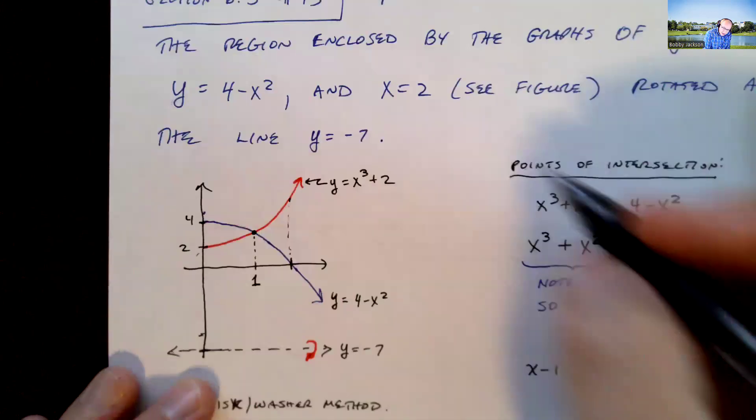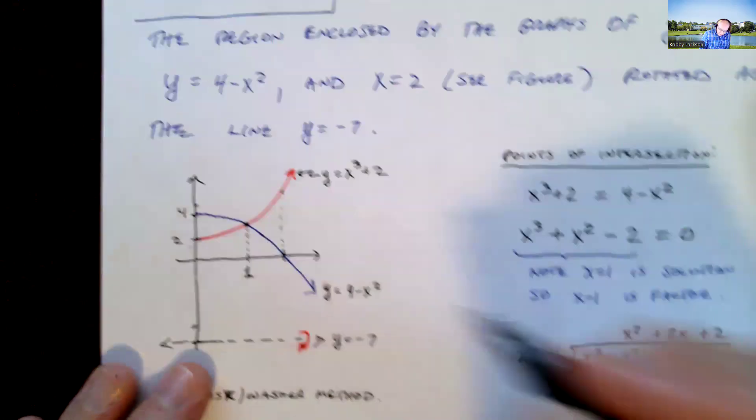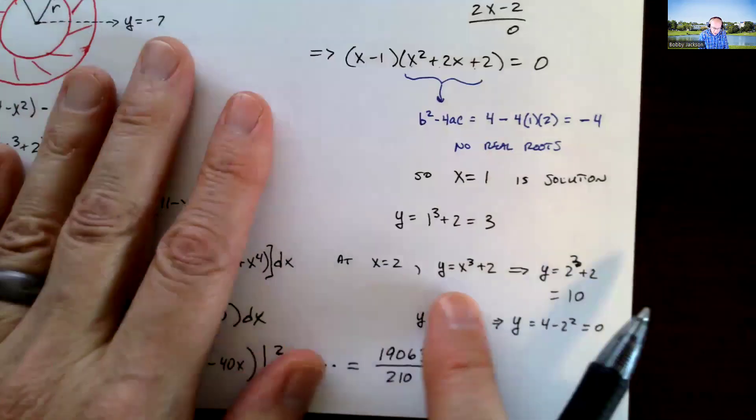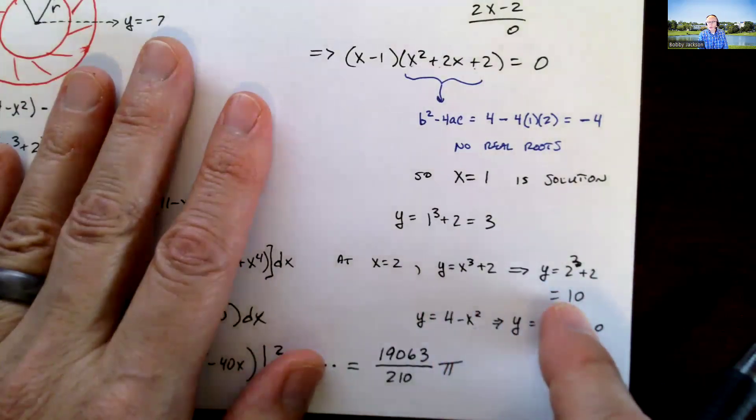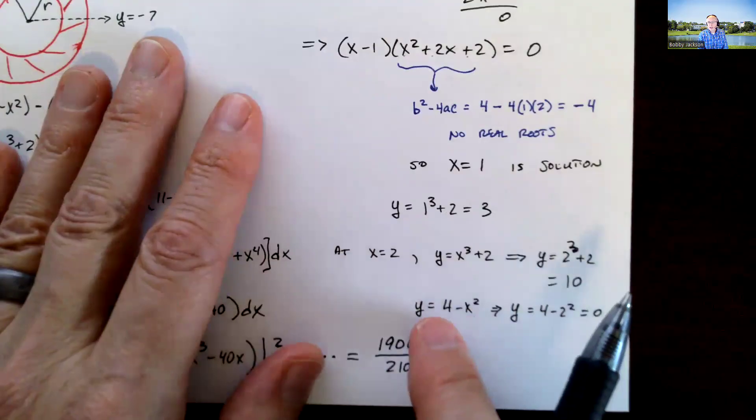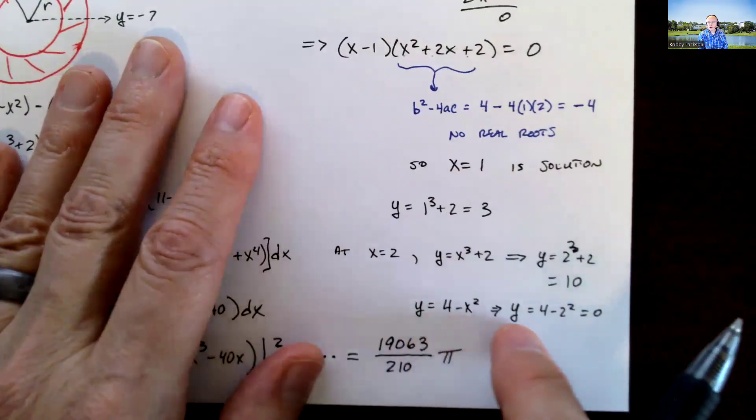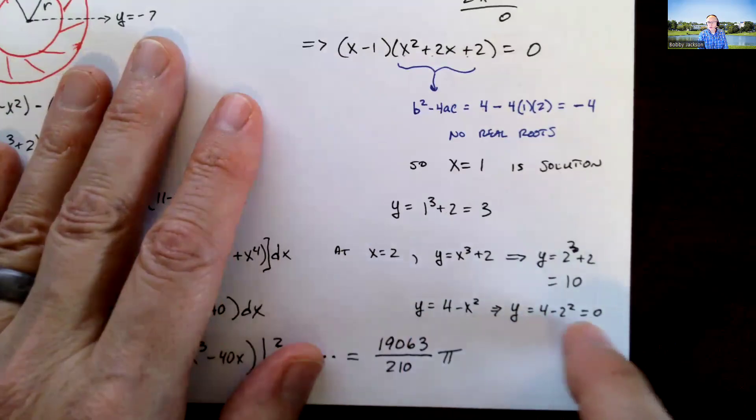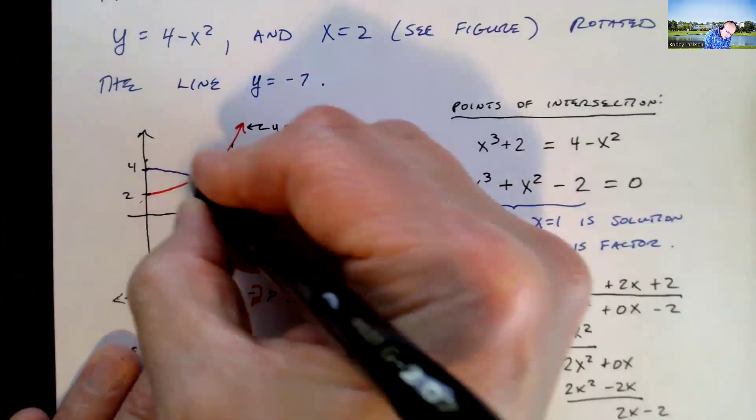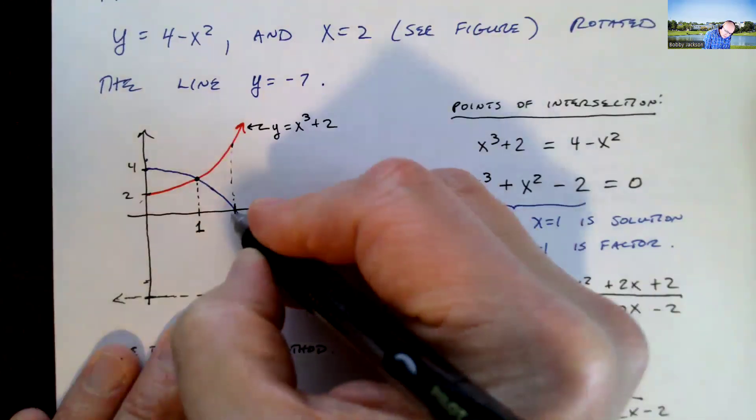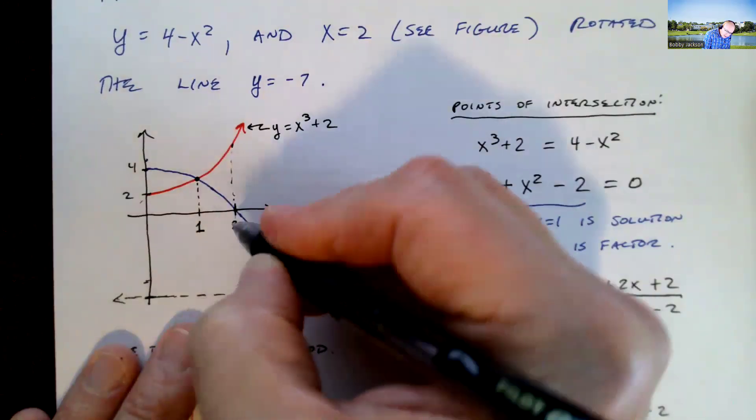And then remember, the line x equal 2, if I plug in x equal 2 into the function y equals x cubed plus 2, I get 10 as my output. So 2 comma 10. And then for y equal 4 minus x squared, if I plug in 2, I get 4 minus 2 squared, 4 minus 4 is 0. So that means when x is 2, the graph of y equals 4 minus x squared is 0, so it's right on the x axis there. That's x equal 2.